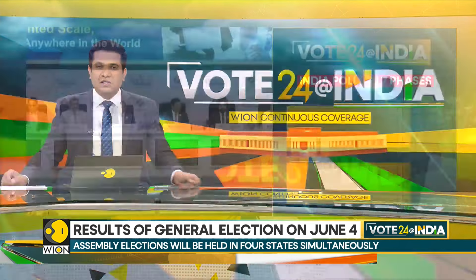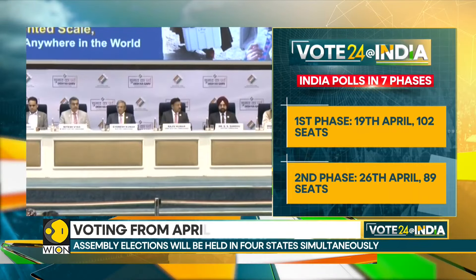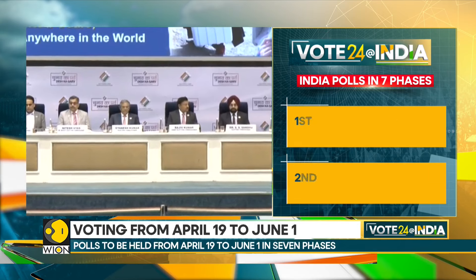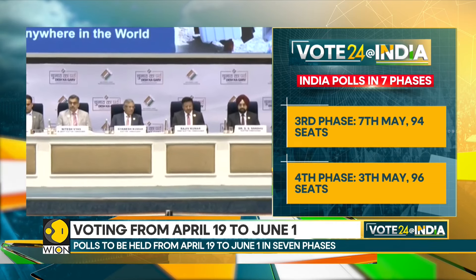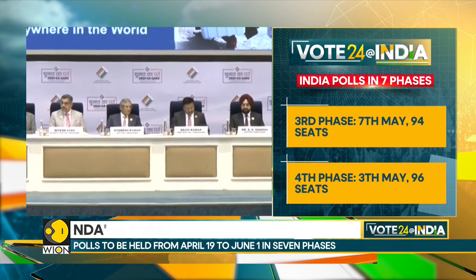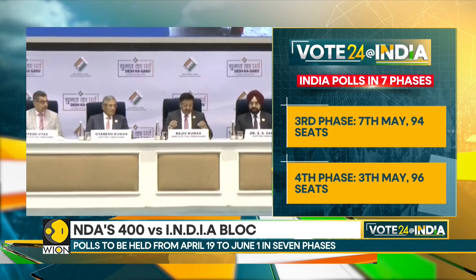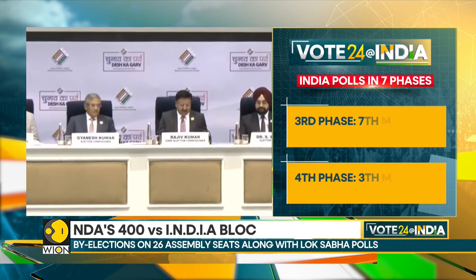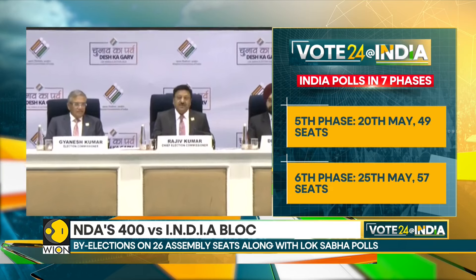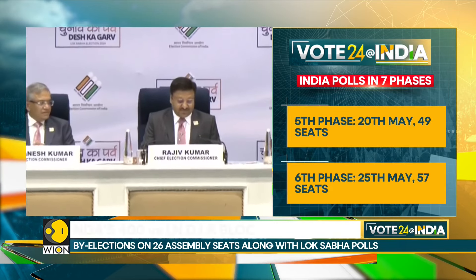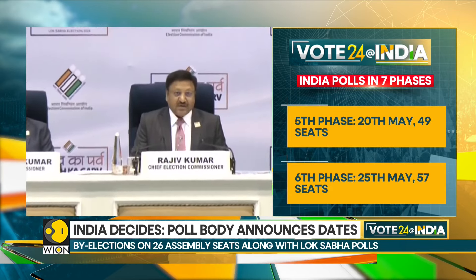There will be simultaneous elections for the parliamentary and assembly constituencies in four states. By-elections are being held for 26 assembly seats in the states of Bihar, Gujarat, Haryana, Maharashtra, Jharkhand, Rajasthan, and Tamil Nadu.